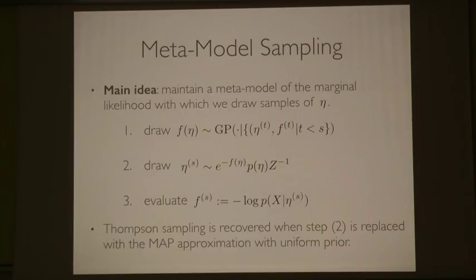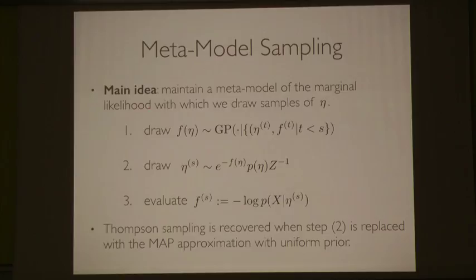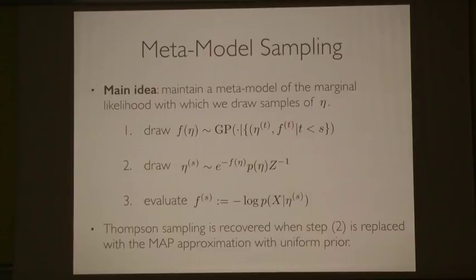Here's the core idea: we have a meta-model of the marginal likelihood from which we draw samples of eta. We repeat three steps for each iteration s. First, draw from the Gaussian process posterior — the meta-model — conditioned on the history of evaluations. Then treat this function as a log marginal likelihood: multiply by the prior and normalize, giving a posterior over hyperparameters conditioned on data. That's where the data enters twice. This candidate evaluation point then feeds into an expensive approximation procedure that evaluates the marginal likelihood, and then eta and f feed back into the history to update the meta-model.